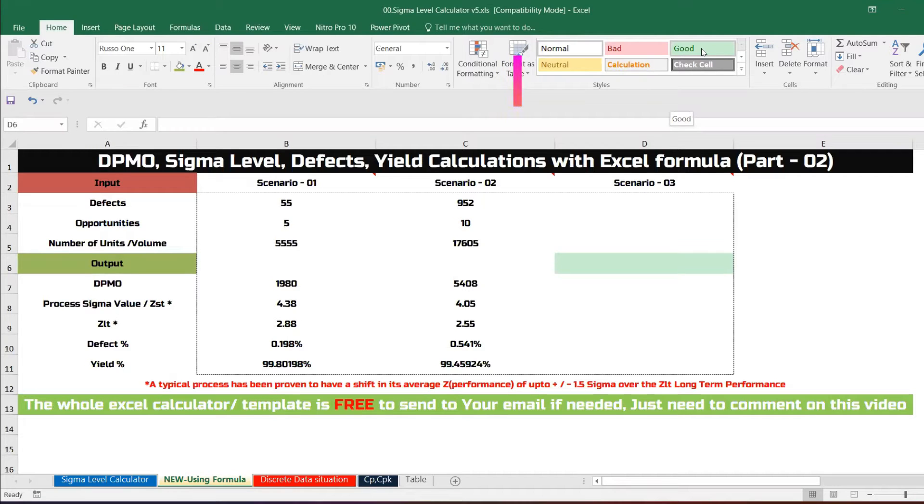DPMO six sigma defects yields calculation, and this is going to be very easy because we are going to do it in Excel formula. This is part two, the same Excel version now upgraded invoking or enabling the formula, and the formula can also be copied.